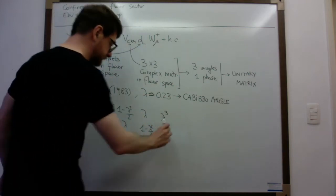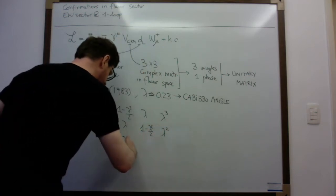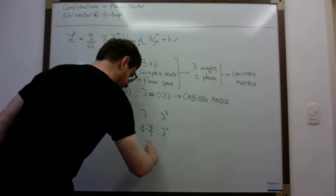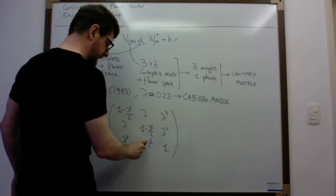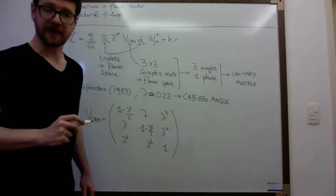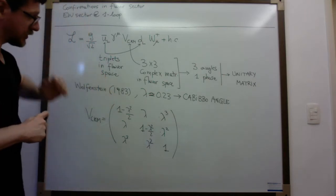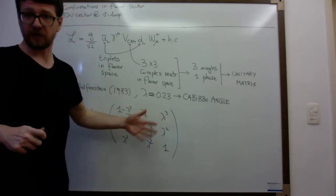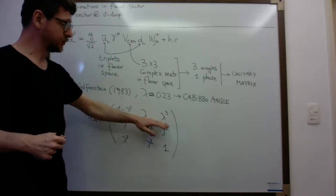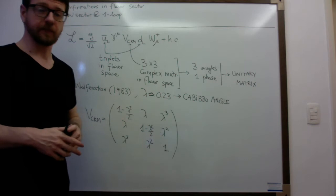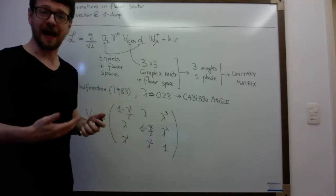Here there is some term of order lambda-cubed apart from order-one factors. Here there is another term of order lambda-squared, and here there is a one. Here, here, here, and here there are order-one numbers that you can find in the notes. As you can see, this is not exactly unitary — you can easily convince yourself that this is not unitary — but it's unitary up to order lambda-cubed. So it was sufficient in 1983 to actually have an idea of what happens.